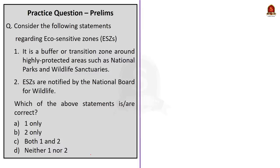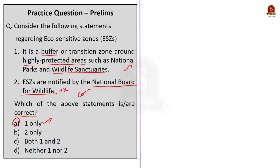The second question is about eco-sensitive zones. Statement 1: It is a buffer or transition zone around highly protected areas such as national parks and wildlife sanctuaries. Statement 2: Eco-sensitive zones are notified by the National Board for Wildlife. Which of the above statements is or are correct? The correct answer is option A — one only. Statement 1 is correct as it is the exact definition of eco-sensitive zones. Statement 2 is incorrect because they are notified by the central government through the Ministry of Environment, Forest and Climate Change under the Environment Protection Act of 1986.